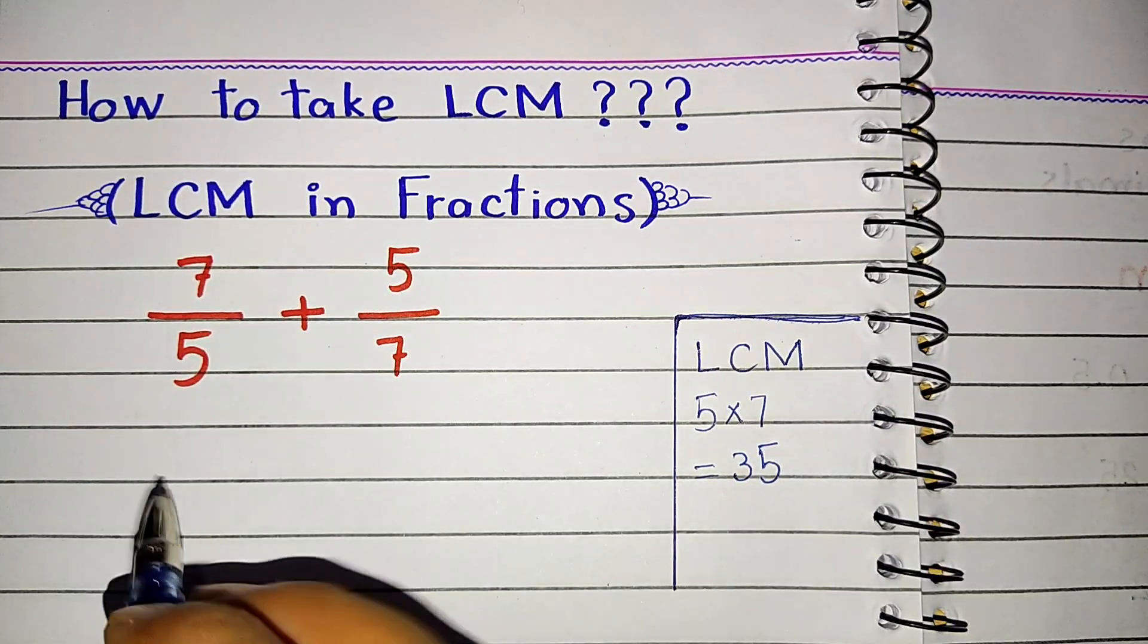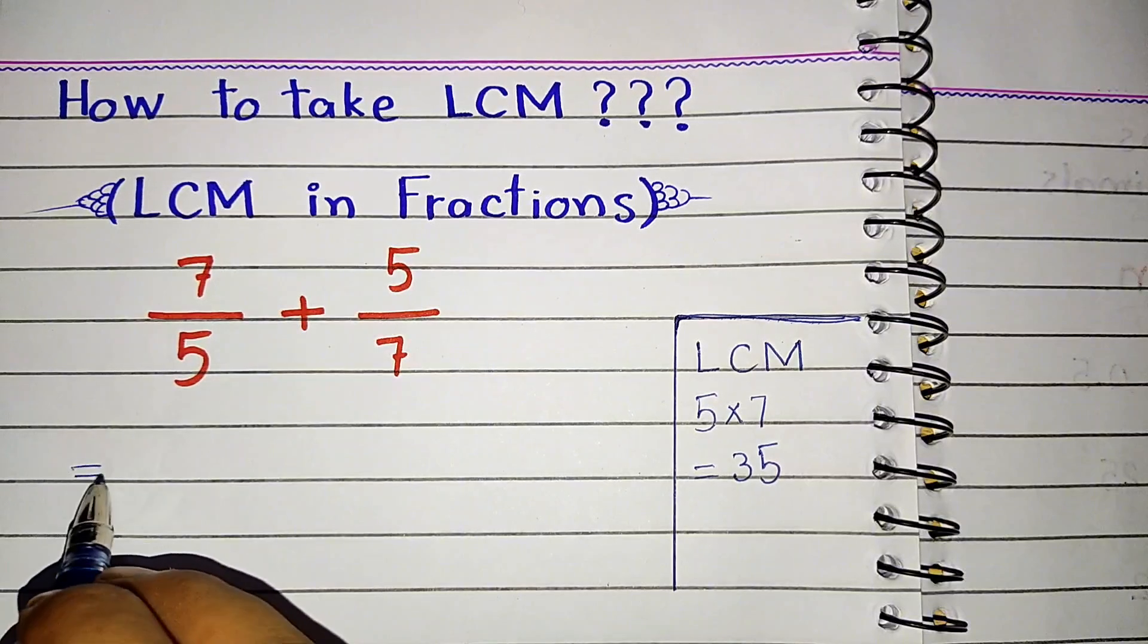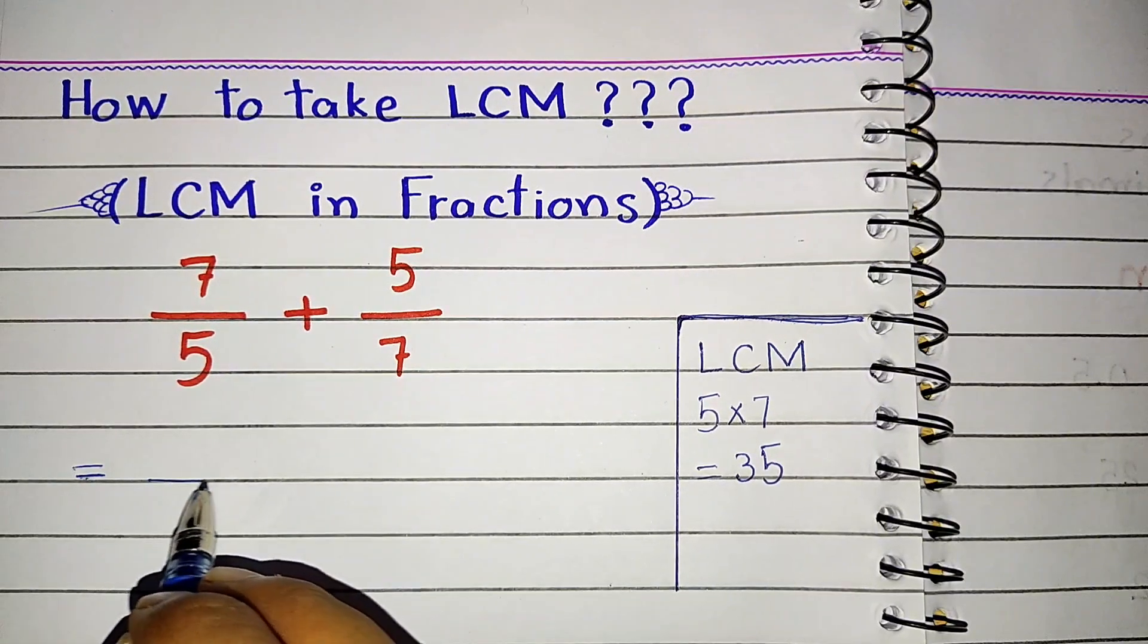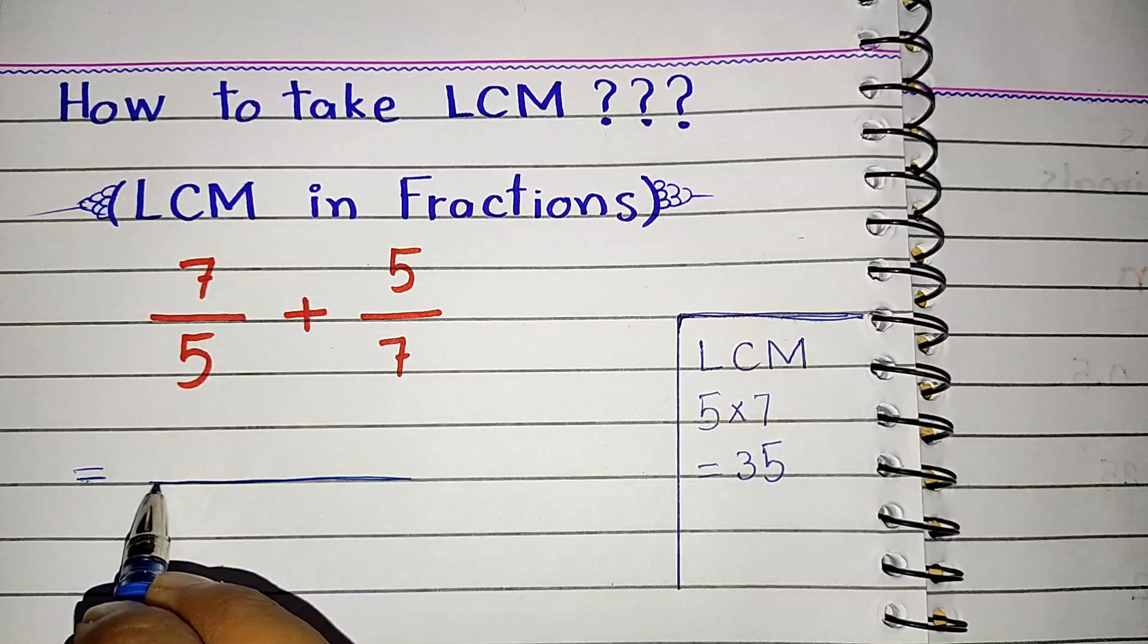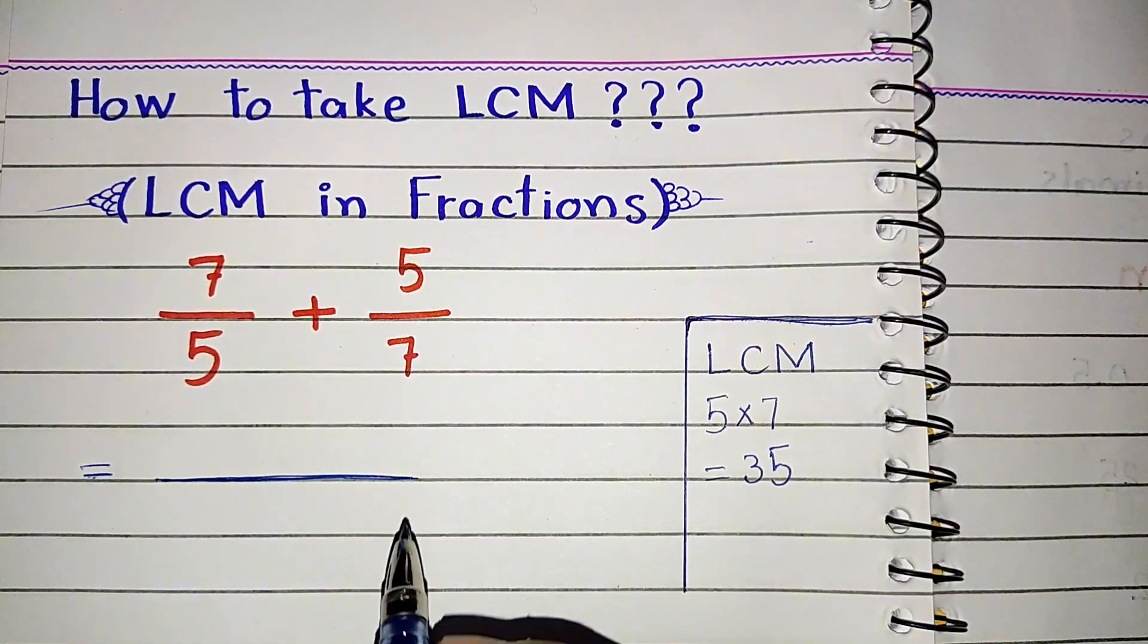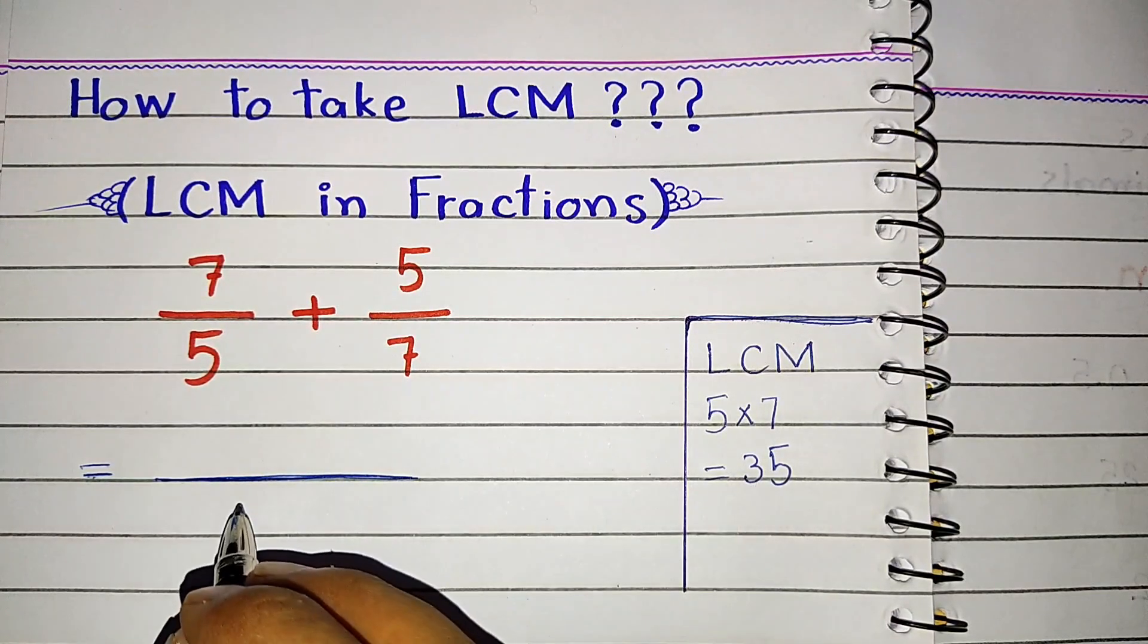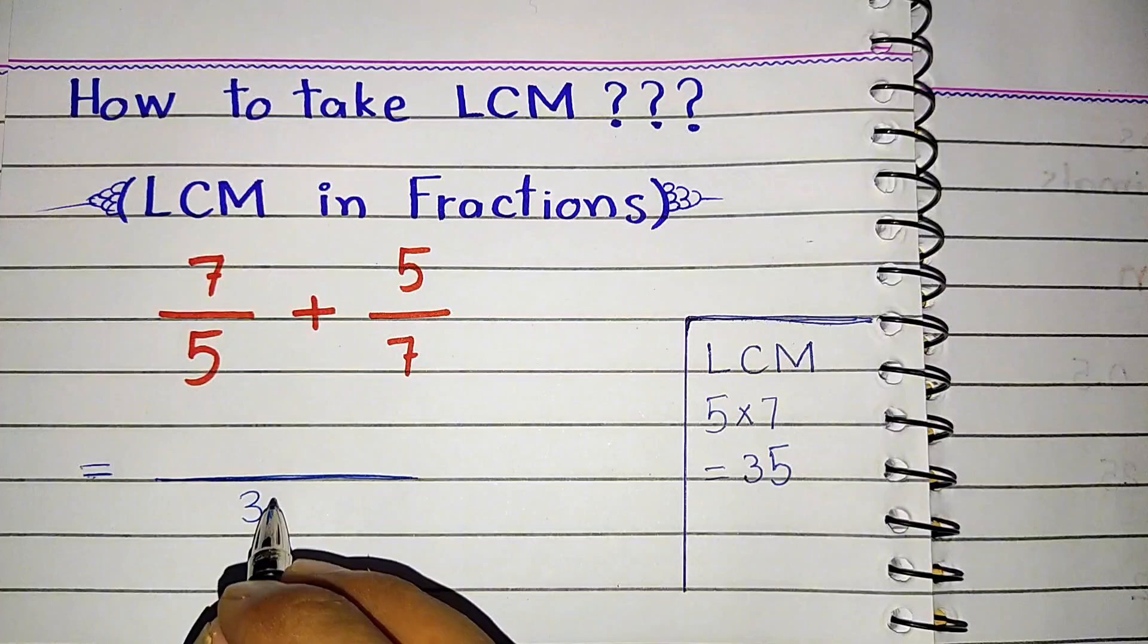The next step is very crucial. We have to put the equal sign and then we have to put a long bar to complete the procedure of addition of fractions. We can write this LCM as the denominator in the next fraction.